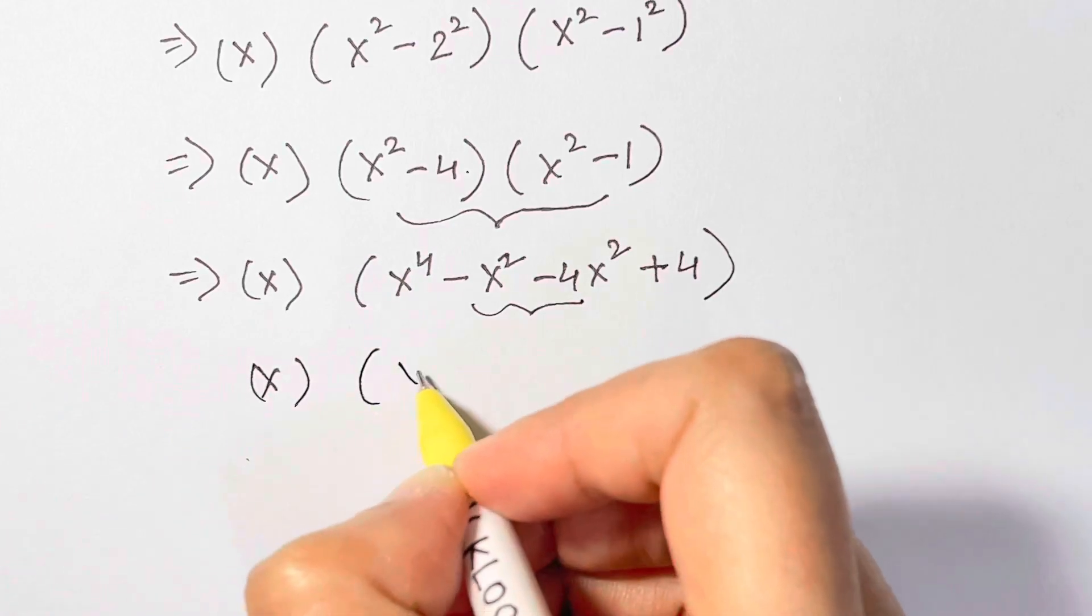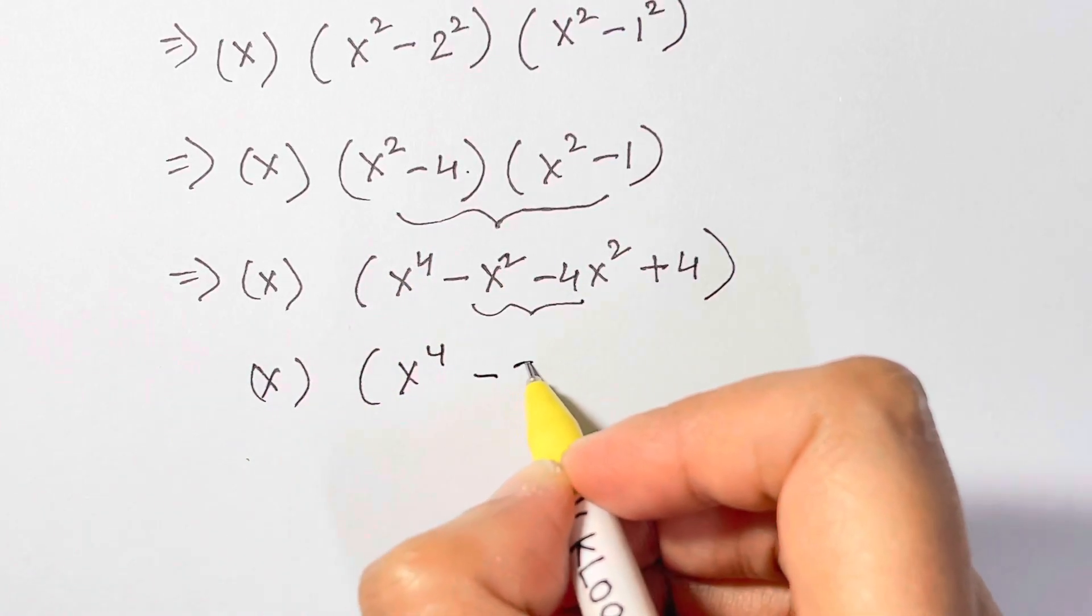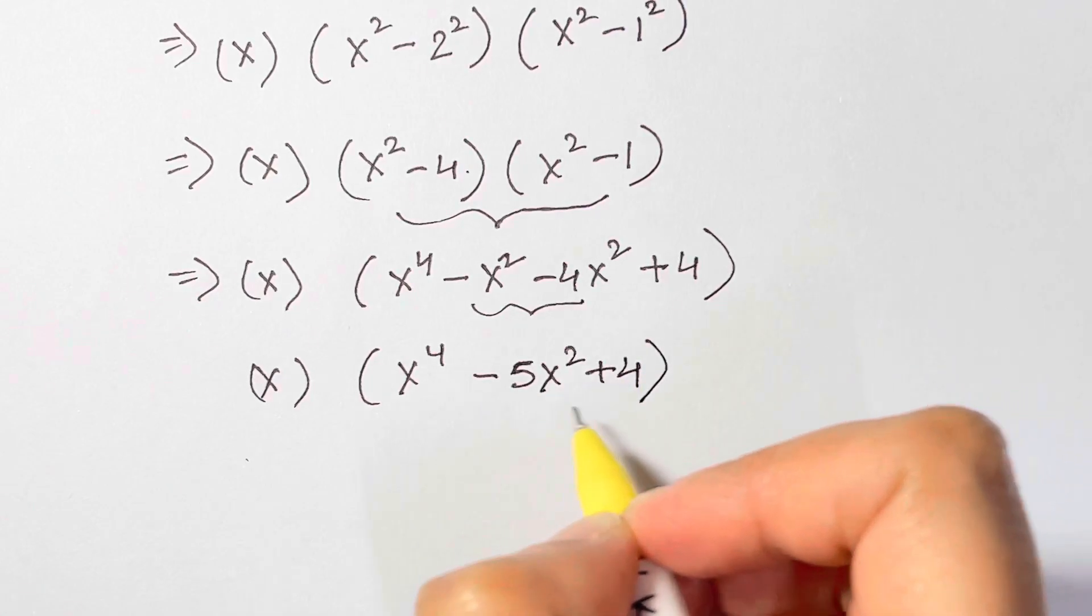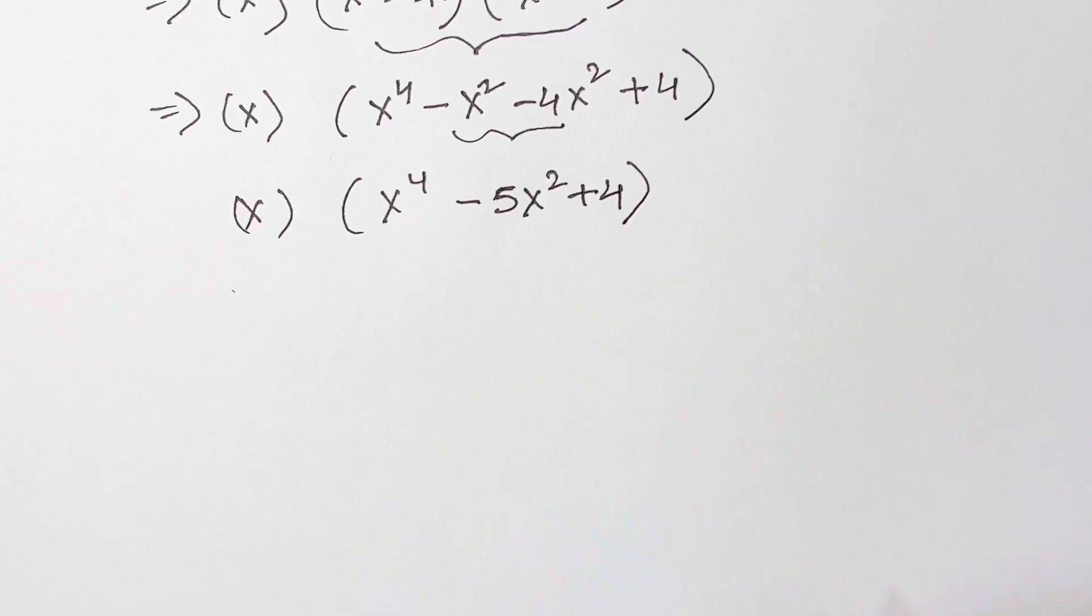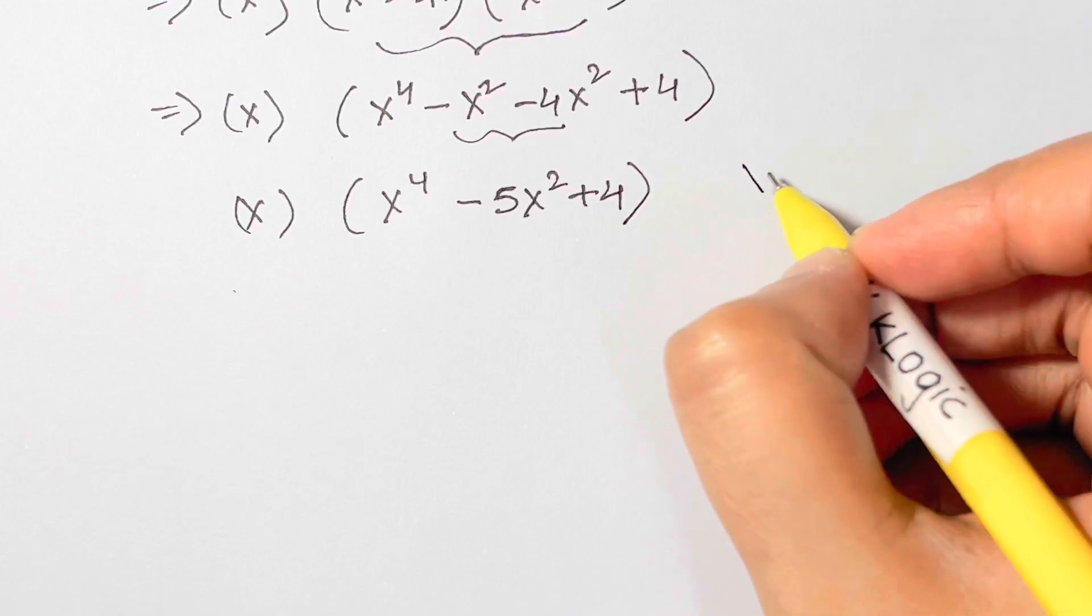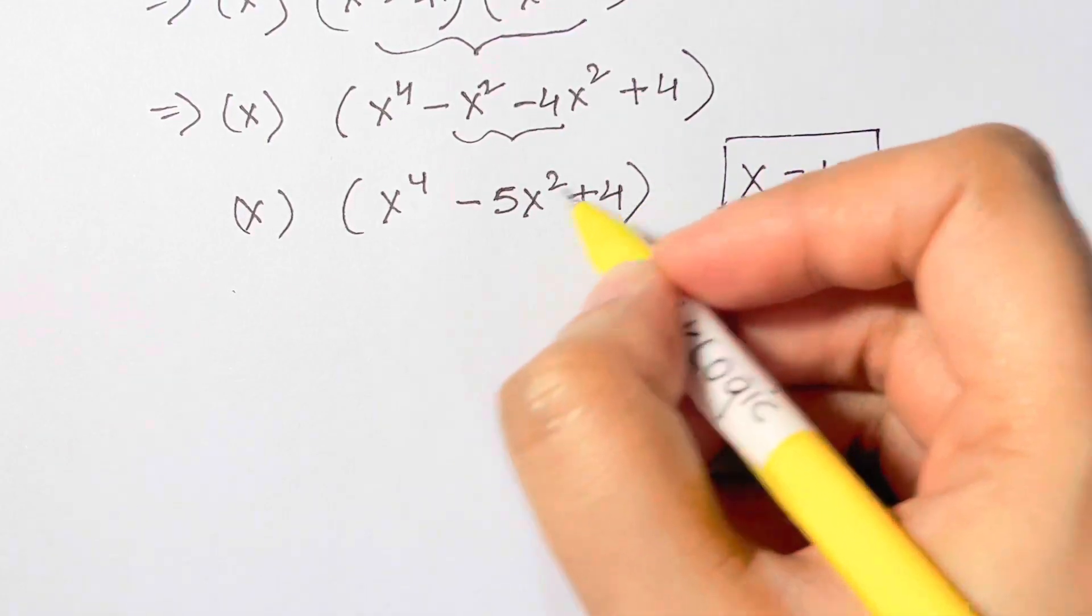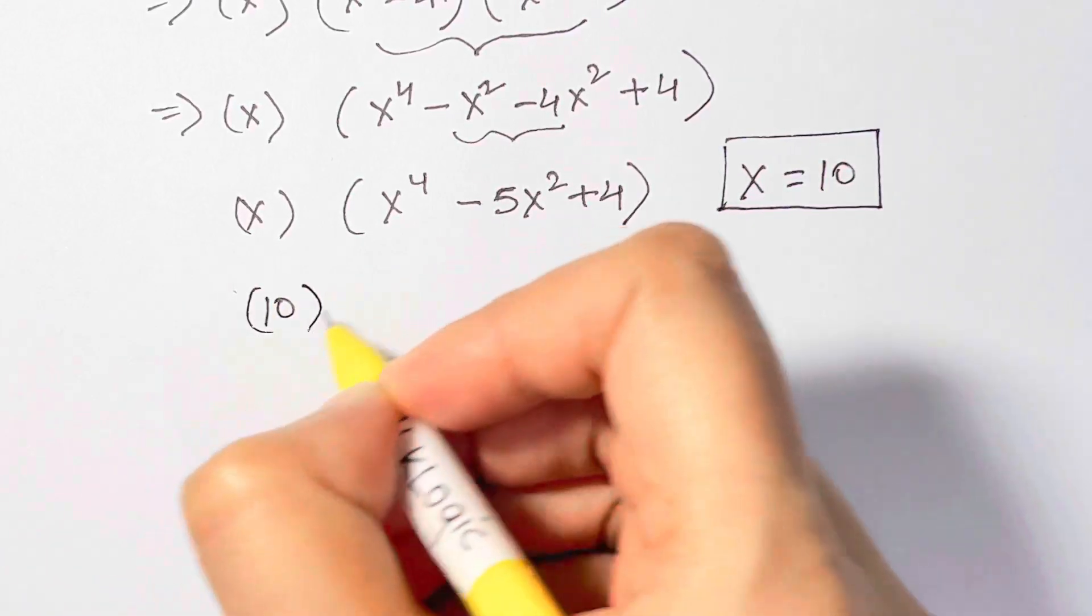Let's see, we can just add them up. x times (x⁴ - 5x² + 4). So you've got an equation here, and as we already know that x is equal to 10, yes, so let's put it back.